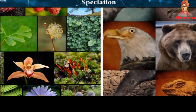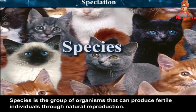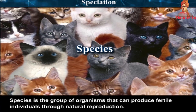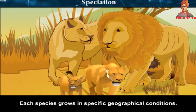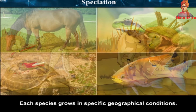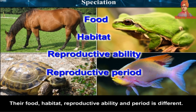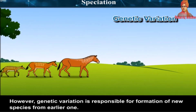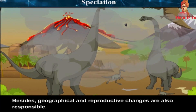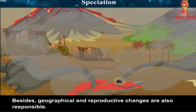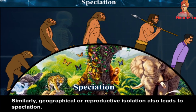Speciation: Formation of new species of plants and animals is the effect of evolution. Species is the group of organisms that can produce fertile individuals through natural reproduction. Each species grows in specific geographical conditions, with different food, habitat, reproductive ability and period. Genetic variation is responsible for formation of new species from earlier ones; besides this, geographical and reproductive changes are also responsible, and geographical or reproductive isolation also leads to speciation.